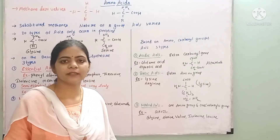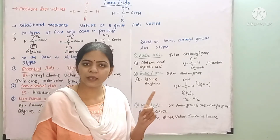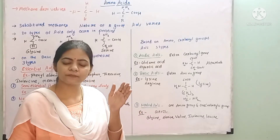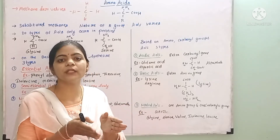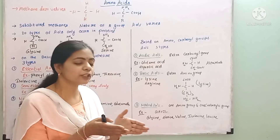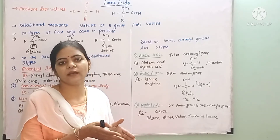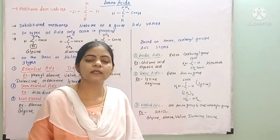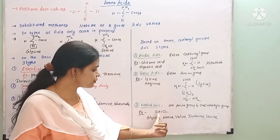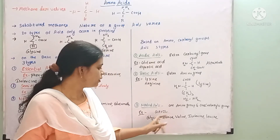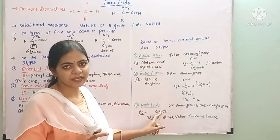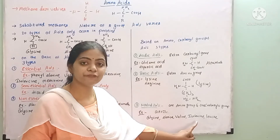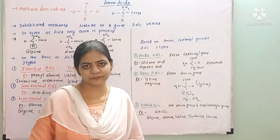Neutral amino acids have one amino group and one carboxyl group. The acidic and basic groups neutralize each other, so these amino acids are in a neutral position. Examples can be remembered using the shortcut GAVIL: G for glycine, A for alanine, V for valine, I for isoleucine, and L for leucine.